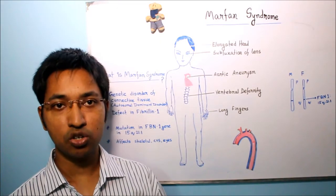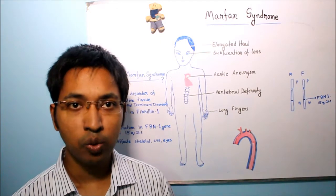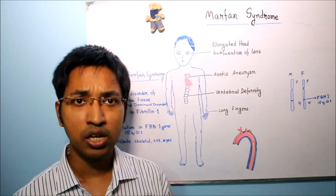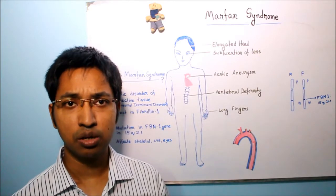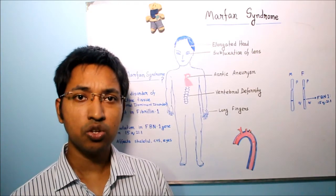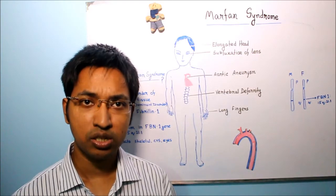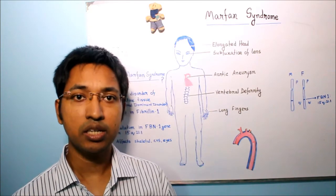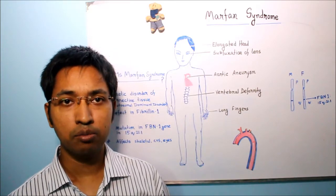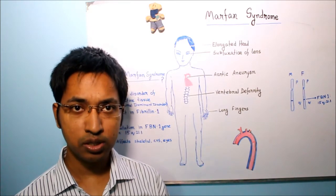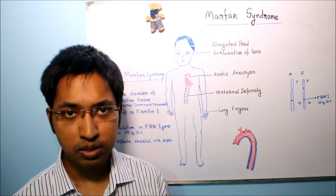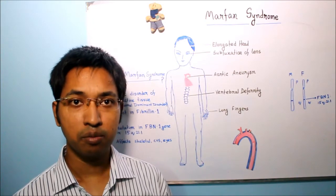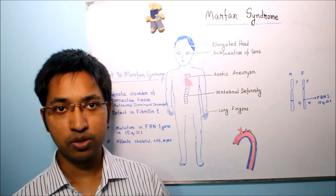You may ask: what do we mean by myxoid change in the mitral valve? Myxoid change in the mitral valve includes thickening of the valve leaflets, fibrosis, and ultimately it may also lead to prolapse of the mitral valve.